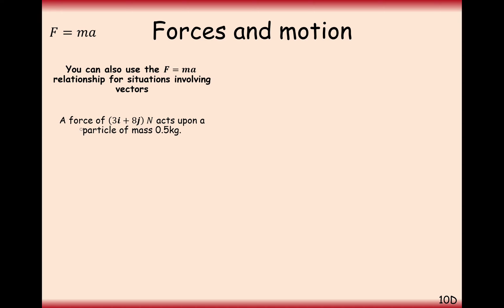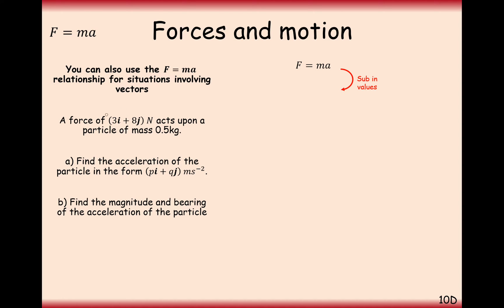So let's look at a question here then. A force of 3i plus 8j newtons acts on a particle of 0.5 kilograms. Find the acceleration of the particle pi plus qj in meters per second squared. So substitute in your values here, you've got force equals 3i plus 8j, 0.5 as the mass, and A on its own there. We want to find the acceleration. So double both sides, double both components there, and we'll have 6i plus 16j meters per second squared.